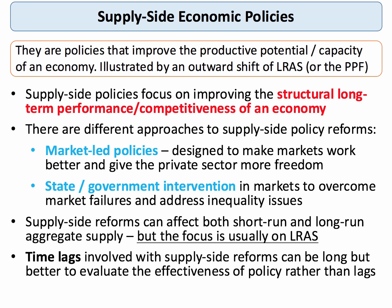Supply-side policies, or SSPs for short, are policies that aim to increase and improve a country's productive potential or capacity. One way of showing this would be to shift out the production possibility frontier or an outward shift of long-run aggregate supply. The key point is that supply-side policies focus on the structural performance or structural competitiveness of a particular country.